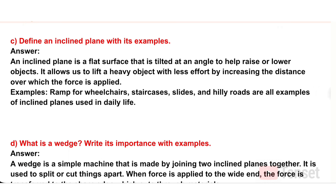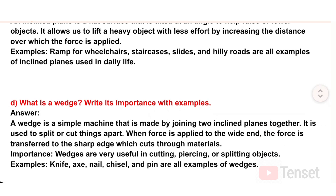C) Define an inclined plane with examples. Answer: An inclined plane is a flat surface tilted at an angle to help raise or lower objects. It allows us to lift a heavy object with less effort by increasing the distance over which force is applied. Examples: ramps for wheelchairs, staircases, slides, and hilly roads are all examples of inclined planes used in daily life.